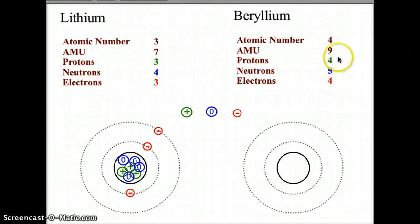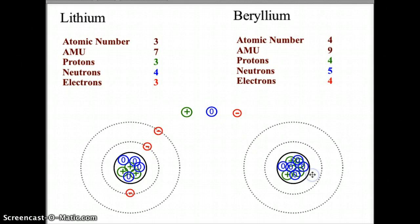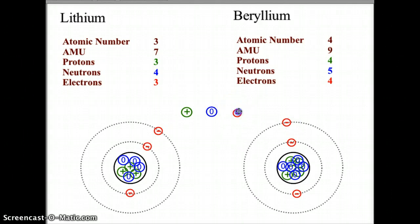Let's try beryllium. Atomic number four, four protons, placed in the nucleus. Beryllium has a mass of nine, so four plus five neutrons gives us the AMU of nine, and those neutrons go into the nucleus. We have four electrons: two in the first orbital level and two in the second orbital level. I put the electrons opposite each other because electrons are both negative and repel each other, so they stay as far apart as possible as they move through the orbits.